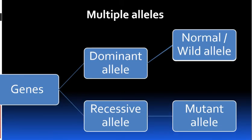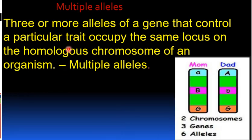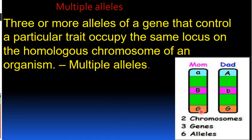Let's look at multiple alleles. Mendelian inheritance involves two alternative forms — one is the dominant gene and the other is the recessive gene. In the dominant gene we have the normal wild-type alleles, and the recessive gene represents mutant alleles. Multiple alleles refers to two or more alleles at the same locus on the homologous chromosomes of an organism.